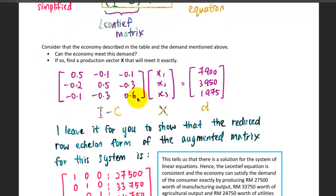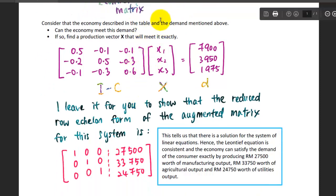Now consider the economy described in the table and the demand mentioned above. Can the economy meet the demand? And if so, find a production vector X that will meet it exactly.